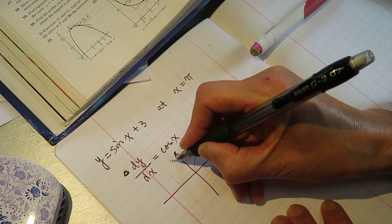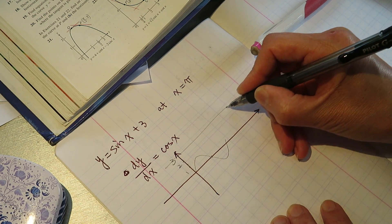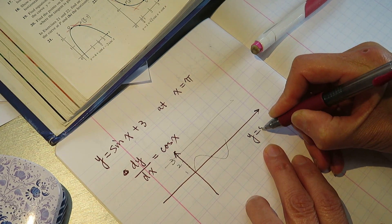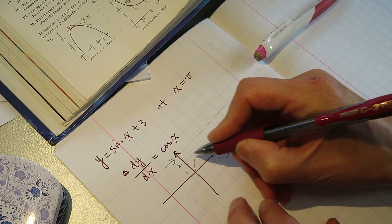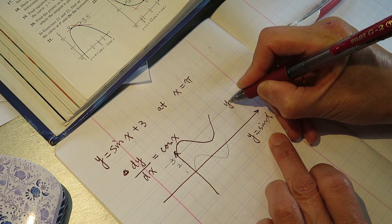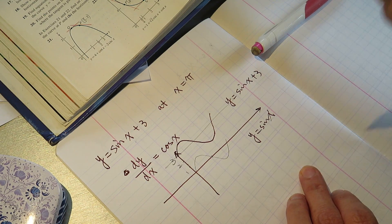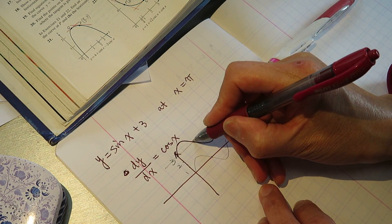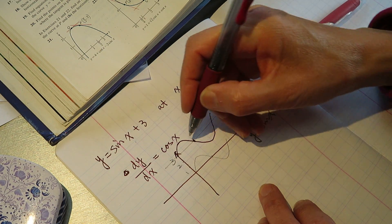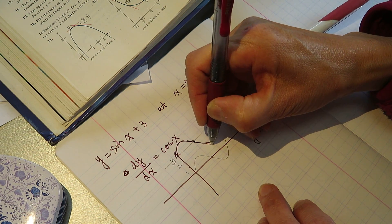So 3, 1, 2, 3 and sine of x is this is y equals sine x, and this will be y equals sine x plus 3, right?